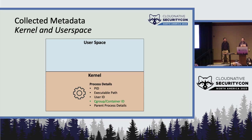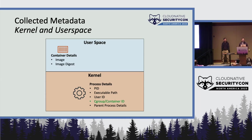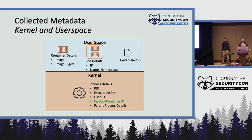Some information is not available inside the kernel and must be obtained from user space. For example, container image name and image digest have to come from user space. Similarly, Kubernetes pod IDs, namespace, and name are obtained from user space. The SHA-256 hash of the executable is also obtained from user space.